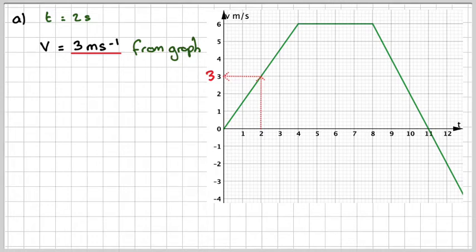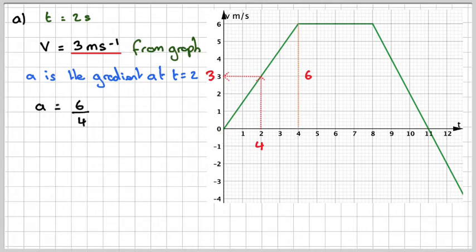Now the acceleration at this particular point here, we find by finding the gradient of this line here. So the gradient will be, this is 6, this is 4, 6 divided by 4. So A will be 6 divided by 4, which will give me 1.5 meters per second squared.